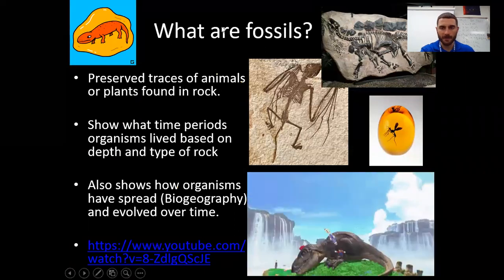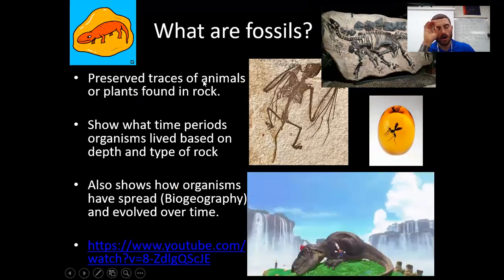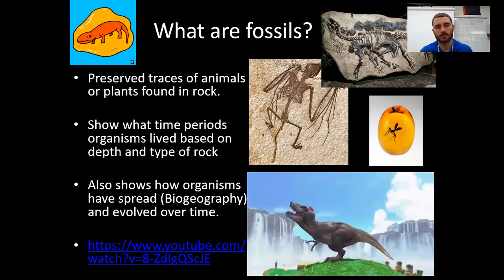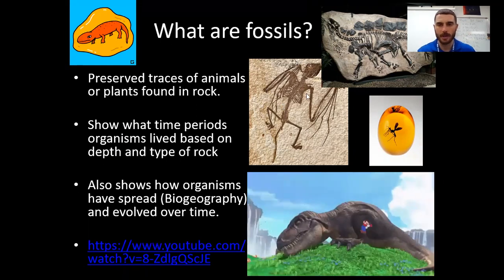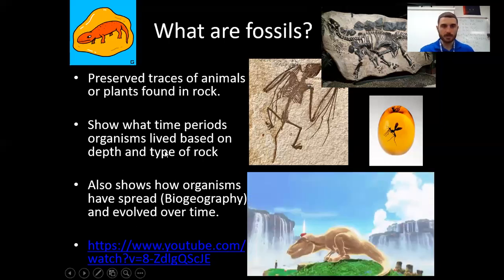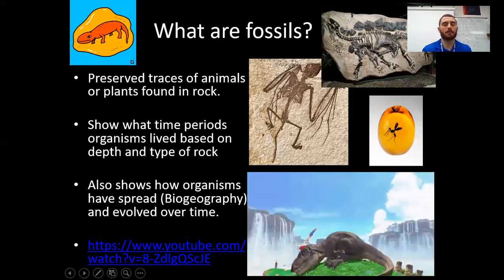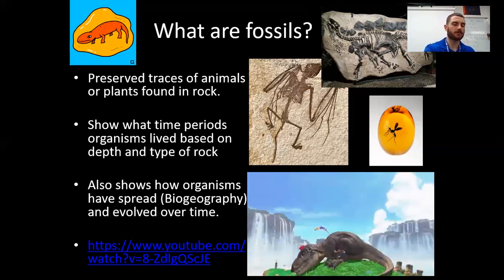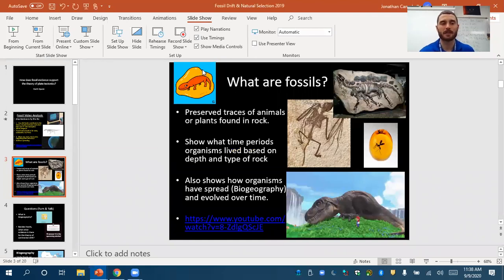Write down what's here. What are fossils? Fossils — we know them as preserved traces of animals or plants found in rock. What happens over time is, if you look inside of a bone, it has little holes inside; over time those holes fill up with water and then mineral. The bone eventually dissolves and gets replaced by minerals — these are basically mineral stamps of bones, not bones anymore. They show what time periods organisms lived in based on depth and type of rock. The deeper the fossil in the ground, the older it is. It also shows biogeography.